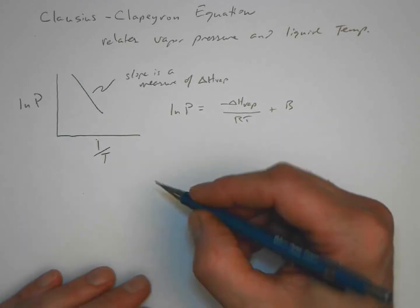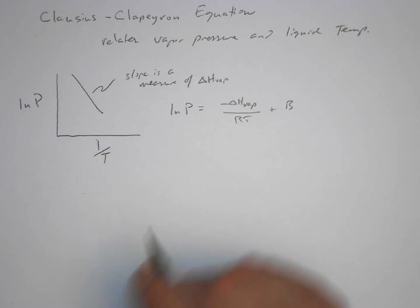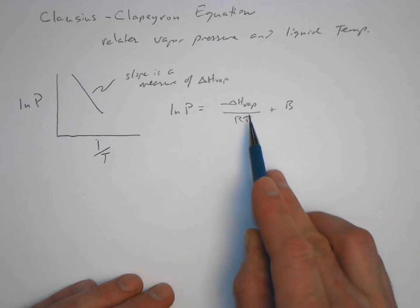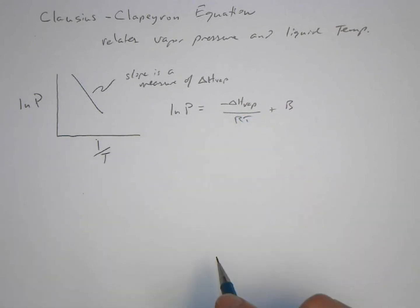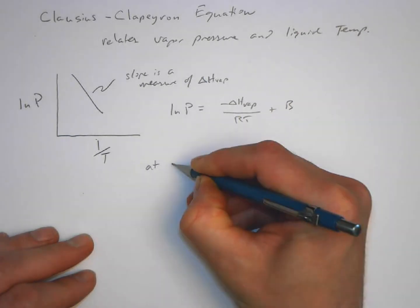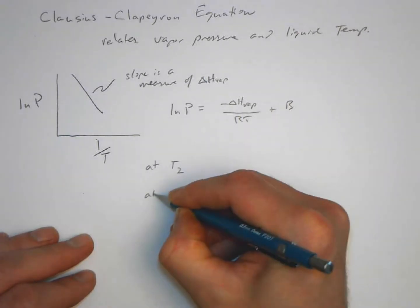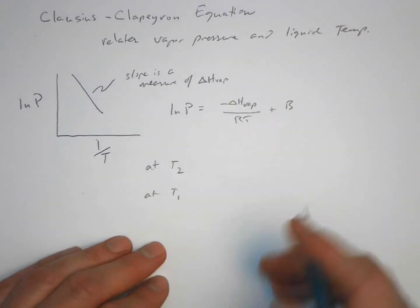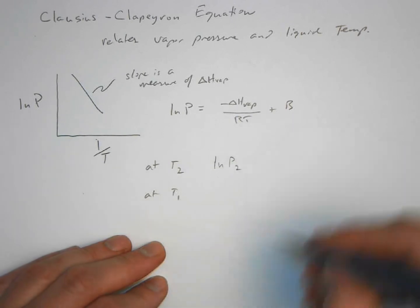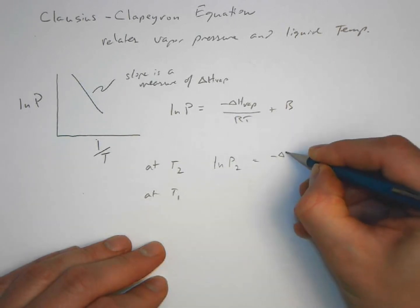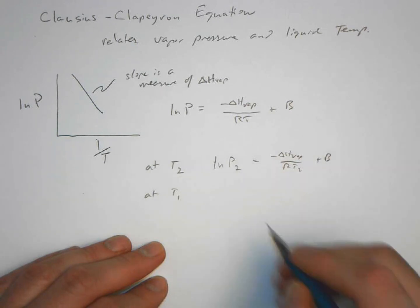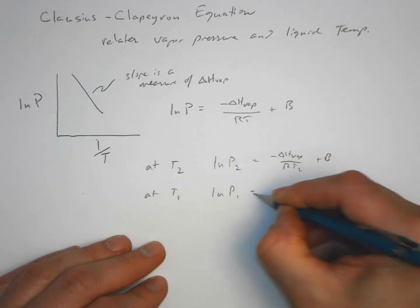So we have this. You can see that the slope would be delta H. Here's what I'm going to do: I'm going to take this at two different temperatures. At one temperature we'd have a vapor pressure. At another temperature we would have a different vapor pressure.